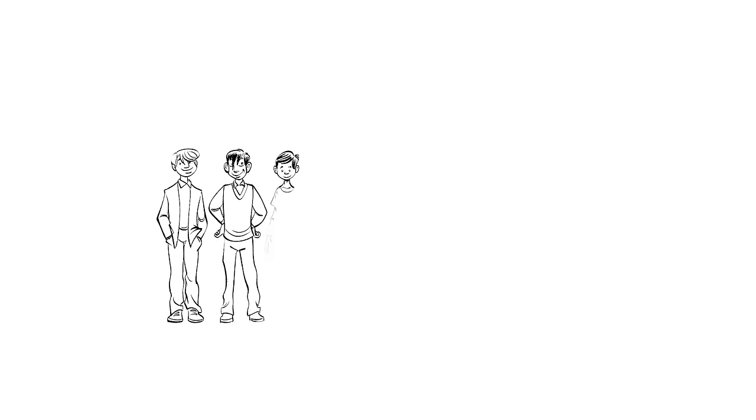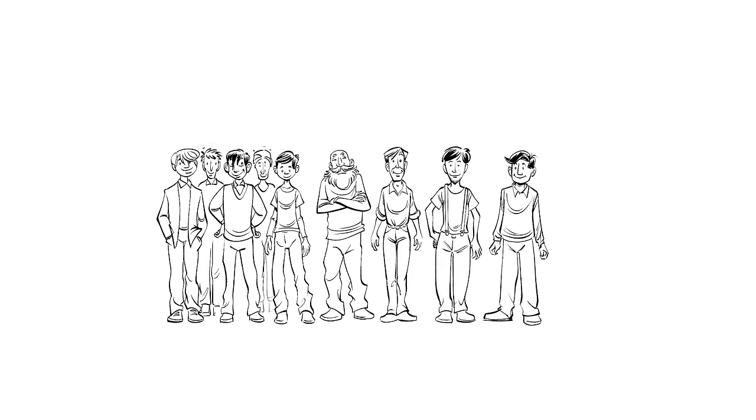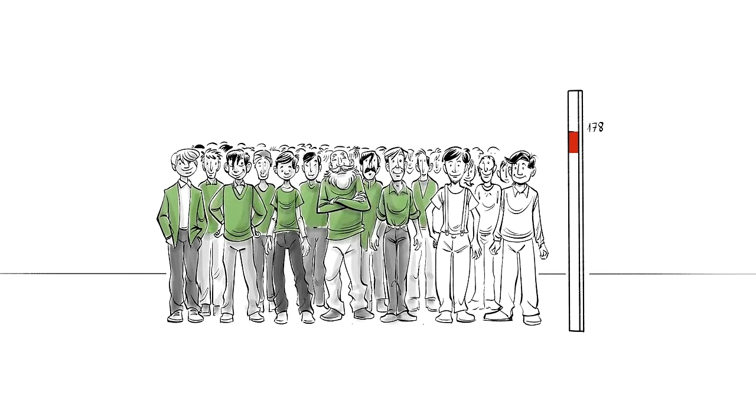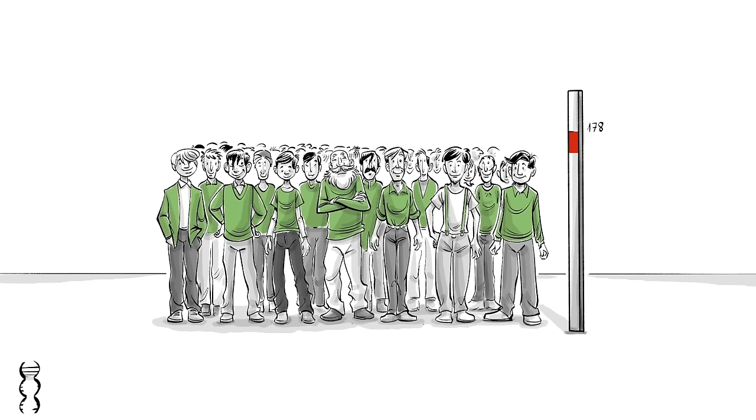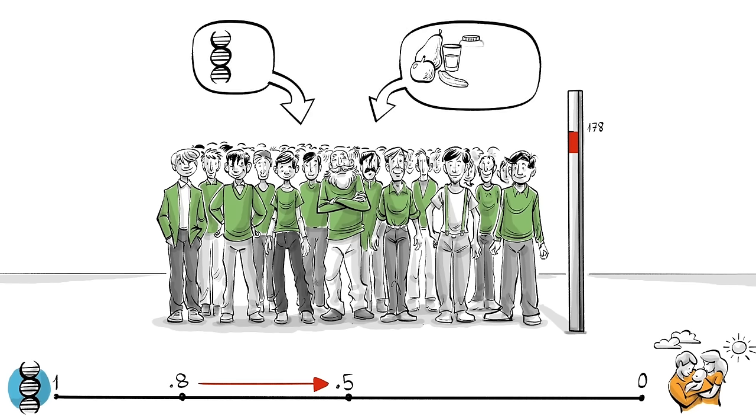If the same group of people were raised in a region that experienced systemic droughts and they never had enough to eat, their potential for an average height of 178 centimeters is far from ever being reached. The heritability for height might now go from 0.8 down to 0.5. Nature and nurture are now equally responsible for group differences.